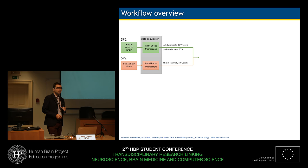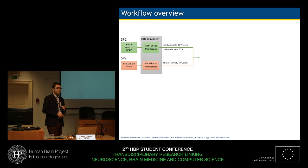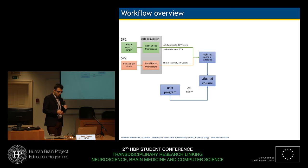These instruments produce huge datasets — we are in the range of 7 terabytes per single tomography, or 10^12 voxels per tomography, so we are in the teravoxel range. The first thing we need to do in our processing pipeline is image stitching.